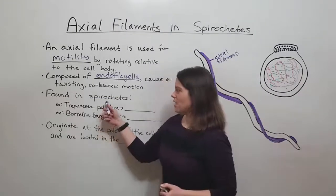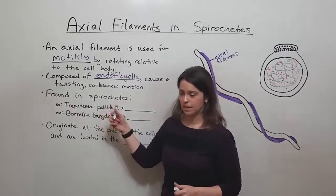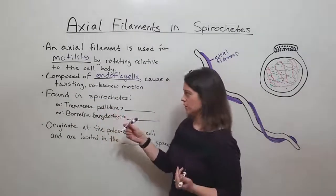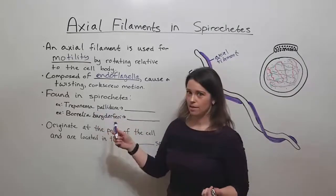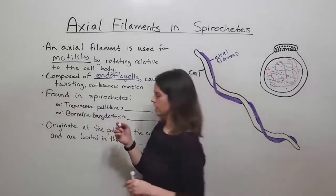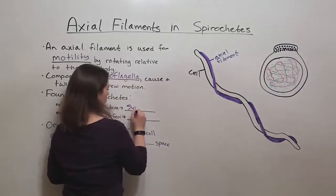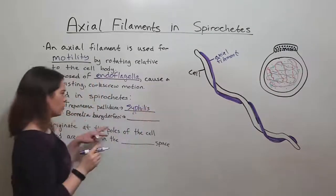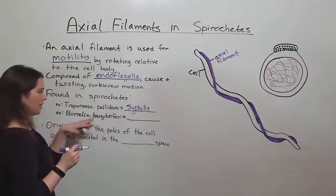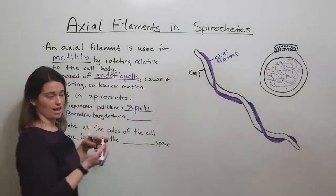It's found in bacteria known as spirochetes. Some examples of spirochetes are Treponema pallidum, which causes syphilis, as well as Borrelia burgdorferi, which causes Lyme disease.